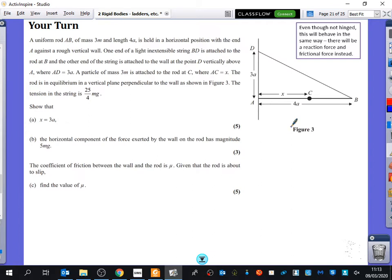Okay, so we've got this uniform rod, mass 3M, length 4A. So I know either side of this is 2A. Against a rough vertical wall, one end of the light inextensible string BD is attached to the rod there. So this is going to be the tension. And it says that AD is equal to 3A, so I've got that information there.